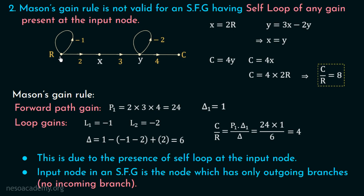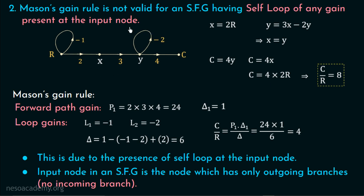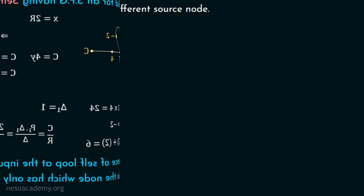Hence, a self-loop of any gain present at the input node of a signal flow graph is invalid, and Mason's gain rule cannot be directly applied to find the overall transfer function. There are two methods to overcome this limitation.